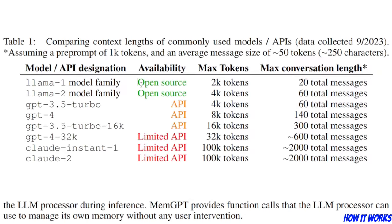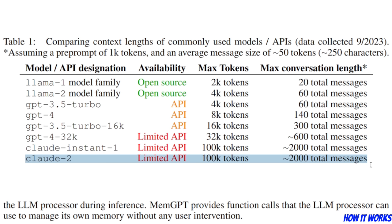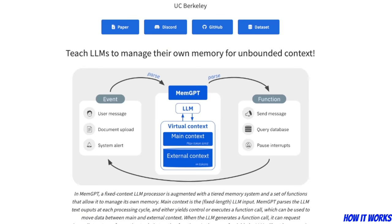If you look at this table, you will see that different models have different context window sizes. For example, the Llama-2 family has 4,000 tokens, and Cohere's Command R has 100,000 tokens. But using this MemoryGPT concept, you can theoretically expand the external context window to infinite memory. That's the main idea in very simple terms.